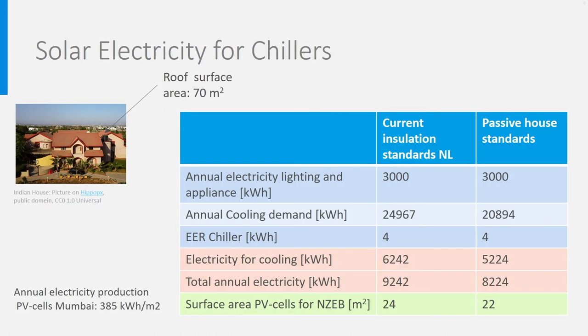In another lecture, we studied briefly this house located in a hot climate like Mumbai. Let's look at the well insulated version and the passive house version of this house. The roof area oriented to the sun is 70 square meter. In both cases, we assume that 3000 kWh electricity is used annually to power lighting and household appliances. The annual cooling demand in the well insulated house is 24,967 kWh. In the passive house, it is 20,894 kWh.